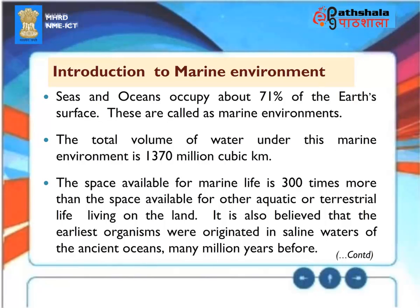Introduction to Marine Environment: Seas and oceans occupy about 71% of the Earth's surface. These are called marine environments. The total volume of water under this marine environment is 1,370 million cubic kilometers. The space available for marine life is 300 times more than the space available for other aquatic or terrestrial life living on the land. It is also believed that the earliest organisms originated in saline waters of the ancient oceans many million years before.